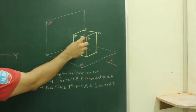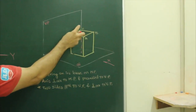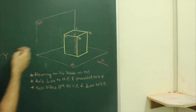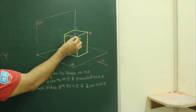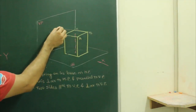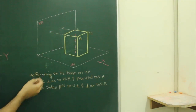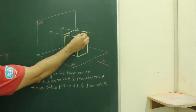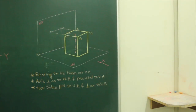If you see, there are four sides: AB, BC, CD, and AD. Out of these, two sides are perpendicular to the vertical plane and two sides are parallel to the vertical plane.